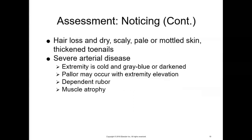Specific findings for PAD depend on the severity of the disease. Observe for loss of hair on the lower calf, ankle, and foot; dry, scaly, dusky, pale, or mottled skin; and thickened toenails. With severe arterial disease, the extremity is cold and gray-blue or cyanotic or darkened. Pallor may occur when the extremity is elevated. Dependent rubor or redness may occur when the extremity is lowered. Muscular atrophy can result from prolonged chronic arterial disease.